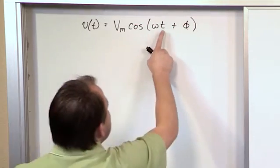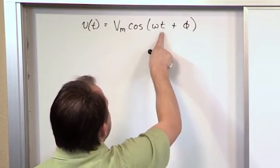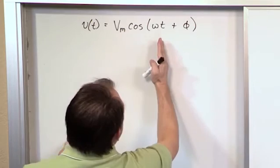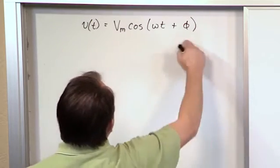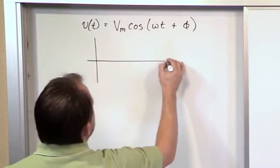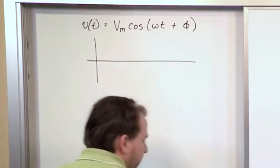So basically as time marches on, then this number goes up, up, up, and so the argument inside increases as time goes on, and so we trace out this cosine function. So if we were to draw this just real quickly again, I know we've drawn it several times, so I'll make it really short here.